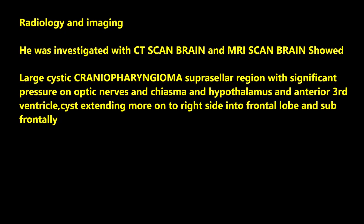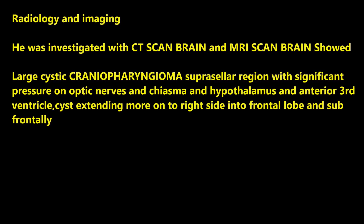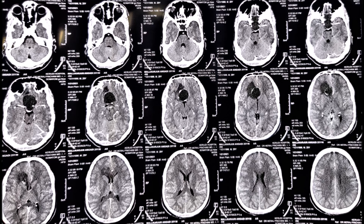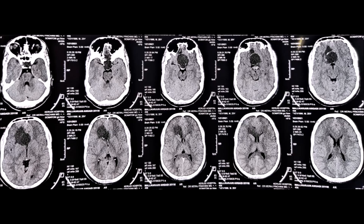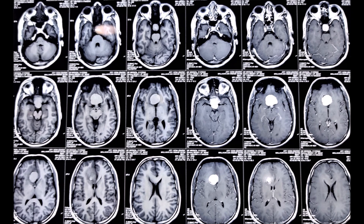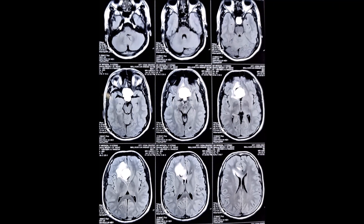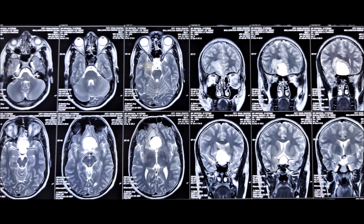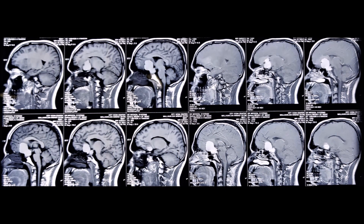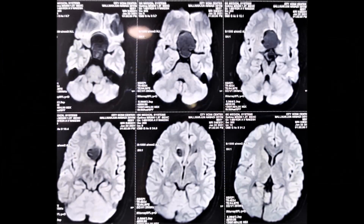He was investigated with CT scan and MRI of the brain which showed a large cystic craniopharyngioma extending into the subfrontal, suprasellar, and subchiasmatic regions with significant pressure on both optic nerves and optic chiasm, lifting the optic chiasm, entering and exerting pressure on the third ventricle and hypothalamus, as shown in these CT and MRI images.